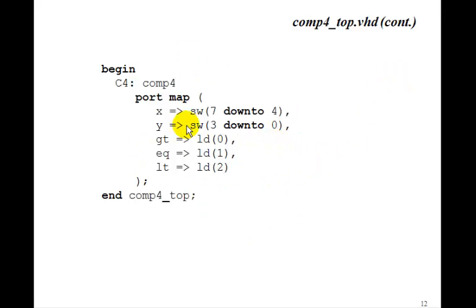And then we just port map it. We'll connect x to the upper four switches, y to the lower four switches. And we'll make LD0 greater than, LD1 equal, and LD2 less than. So you can download this program to your FPGA board. And as you change the upper switches and the lower switches, you can observe the LEDs and verify that you either get greater than, equal, or less than for the four-bit comparator.